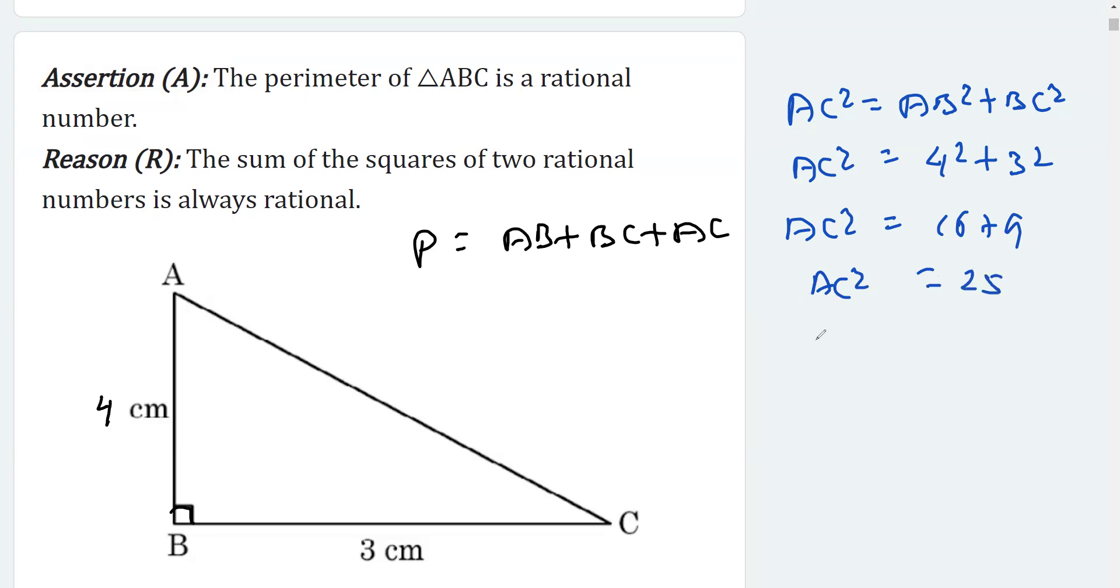AC squared will come as 25, that implies AC is 5. Now if I replace this length here with 5, we continue finding the perimeter. AB which is 4, BC which is 3, and AC which is 5.